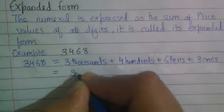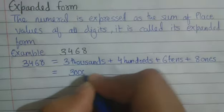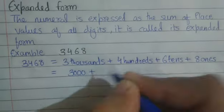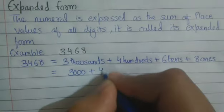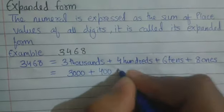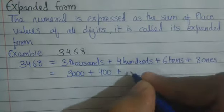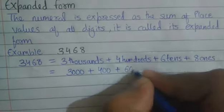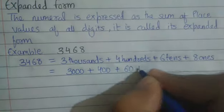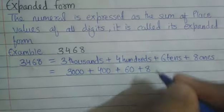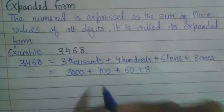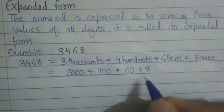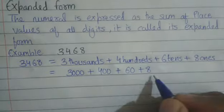We can write it as 3000 plus 400 plus 60 plus 8. Here it is expressed in expanded form.